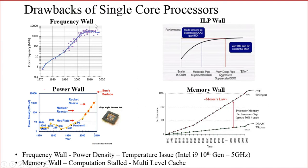What do we mean by the frequency wall? This graph shows the year on the x-axis and clock frequency in megahertz on the y-axis. In around 1972 you can see that the clock frequency of the microprocessor was less than 1 MHz, and the frequency was getting increased year by year. By around 2018–2019 it has reached around 1000 megahertz.